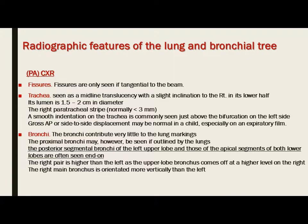The bronchopulmonary nodes drain to the tracheobronchial nodes, then to the paratracheal nodes, and then to the bronchomediastinal trunks. This is important to know in cases of lymphangitis carcinomatosa, because when lymph nodes are involved by a tumor, lymphatic drainage stops and malignant cells accumulate in the lung.